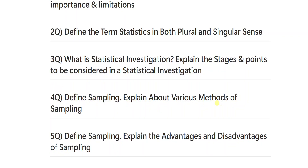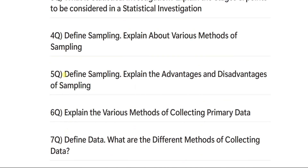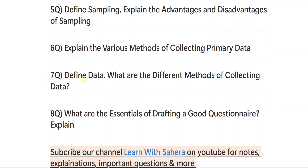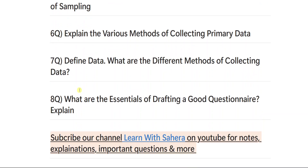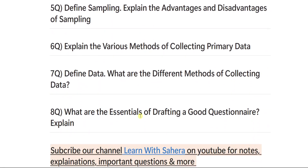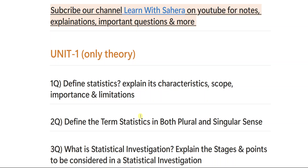Question number 4 is: define sampling and explain about various methods of sampling. Question number 5 is: define sampling and explain the advantages and disadvantages of sampling. Both these questions are from the same topic — sampling — so be perfect with sampling, its various methods, and advantages and disadvantages. Question number 6 is: explain the various methods of collecting primary data. Question number 7: define data and explain the different methods of collecting data. Question number 8: what are the essentials of drafting a good questionnaire? These are the 8 important questions from unit number 1, and with these you will definitely get full marks.